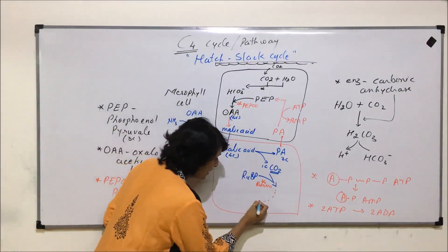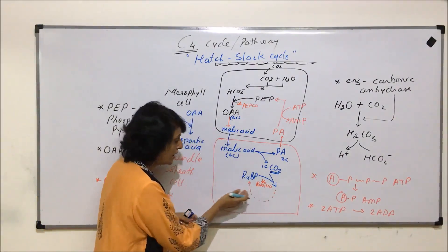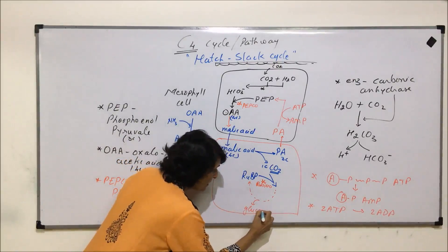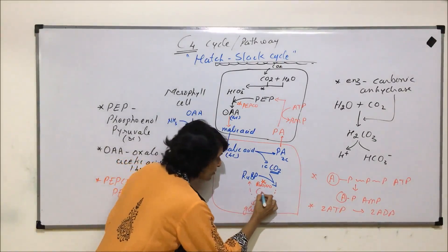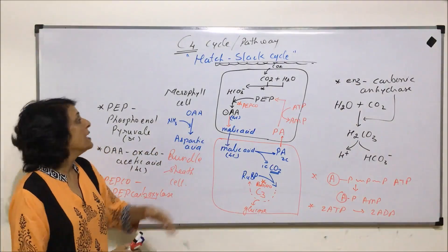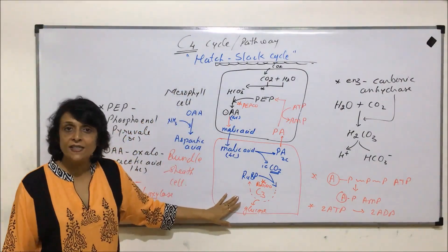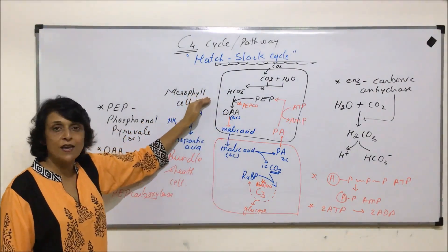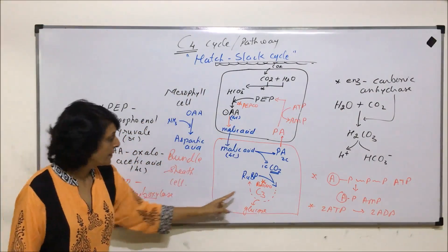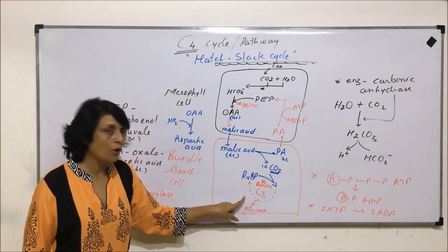So this process will continue — carboxylation, then reduction, then regeneration — and glucose will be synthesized. This cycle is actually the C3 cycle. In C4 plants, the site of the C3 cycle has been shifted from mesophyll cells to bundle sheath cells. By doing this, Rubisco will always act as a carboxylase.